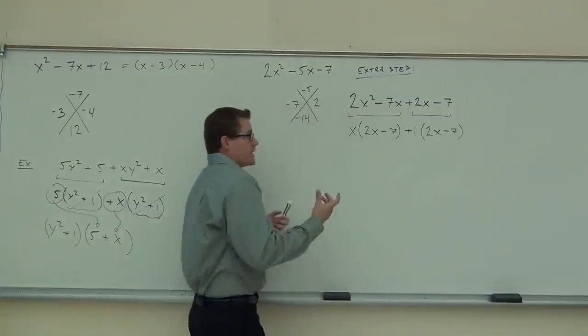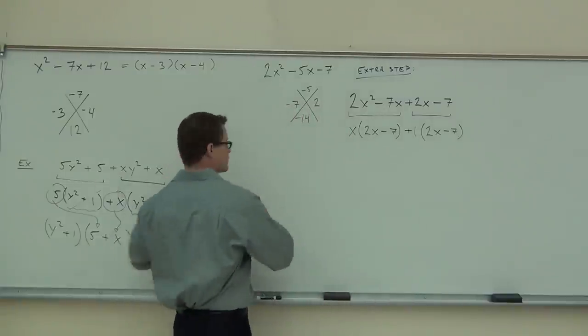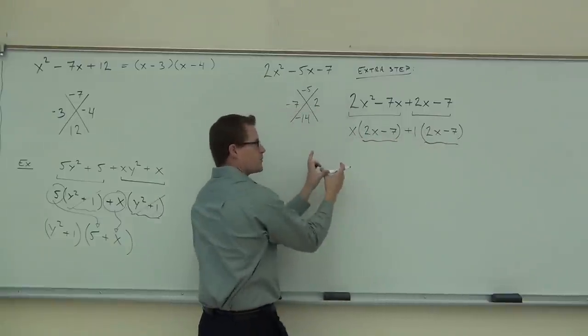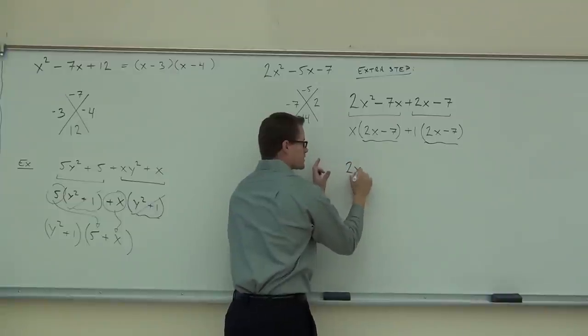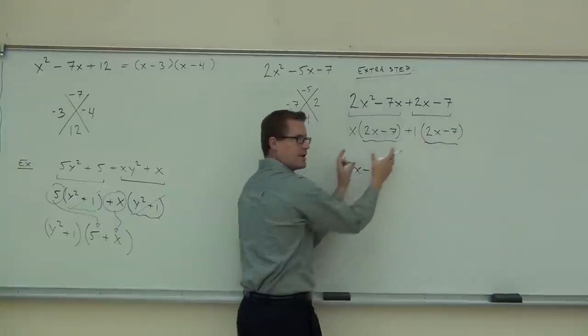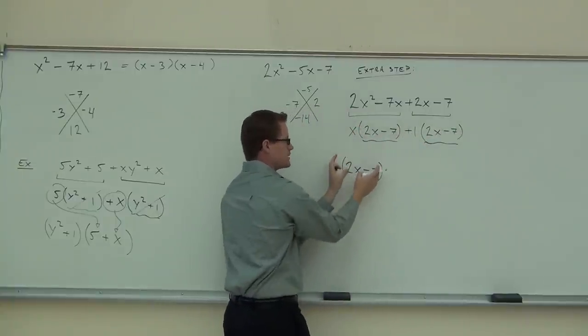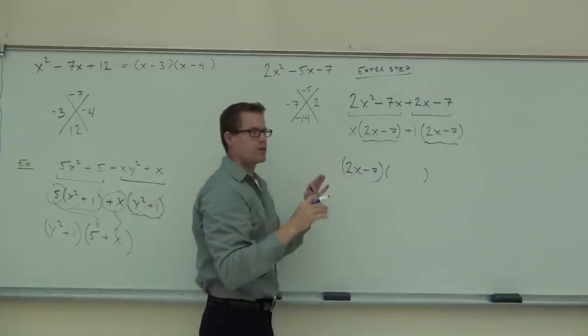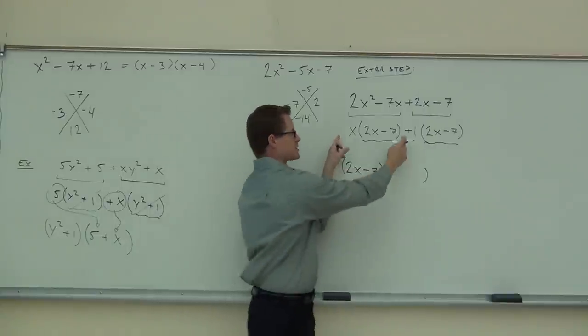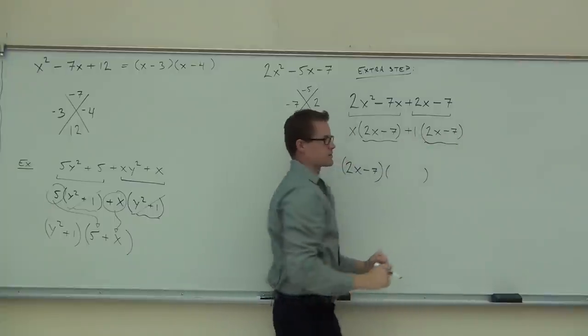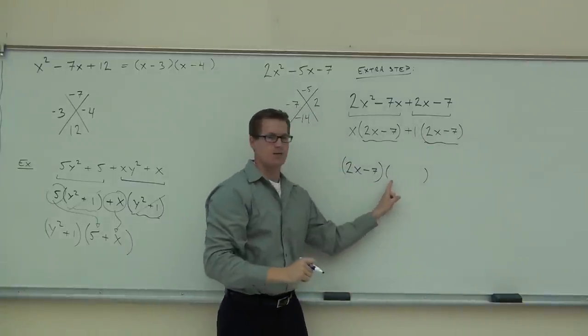So they are the same, which means we can go about the same thing we did over here. This part and this part, we're going to factor out. We're going to put our 2X minus 7. Remember, we're dividing it. We're factoring this out so it's removing from both these terms. That's why we're only going to have it once down here. So we're taking this out front and we're going to have another parenthesis afterwards. And the only thing we have to do is write this term with this gone, and this term with this factor gone.